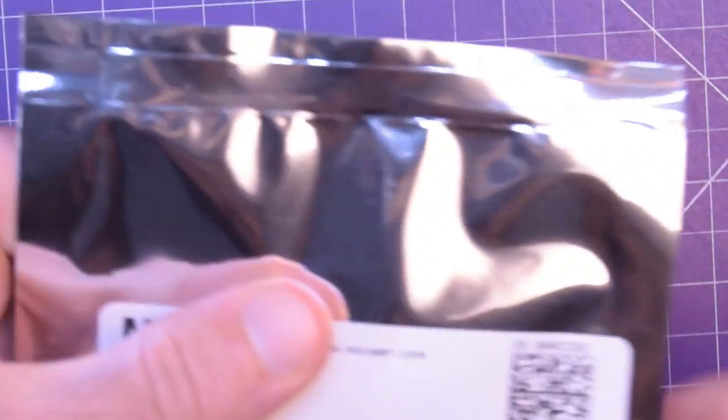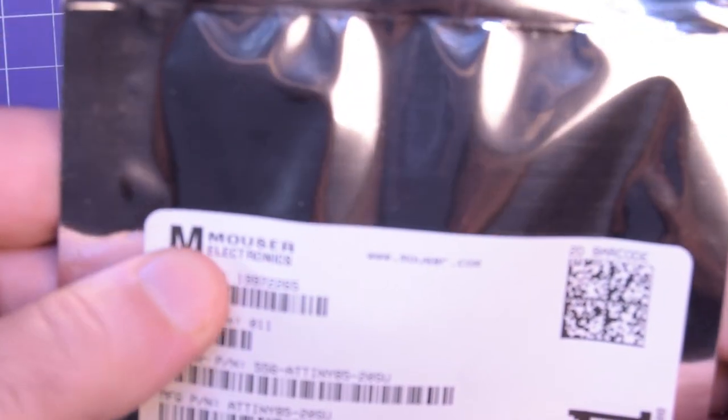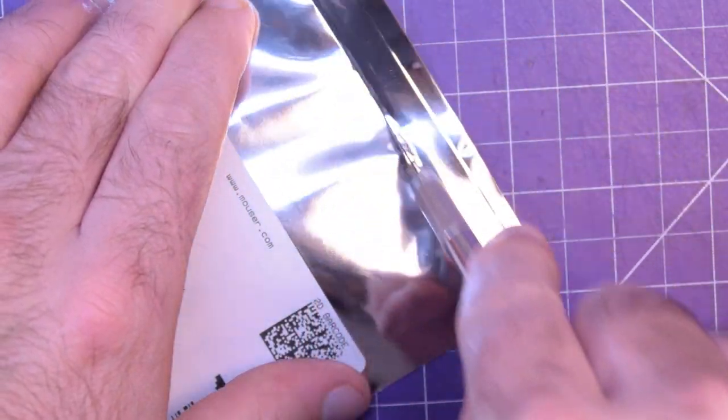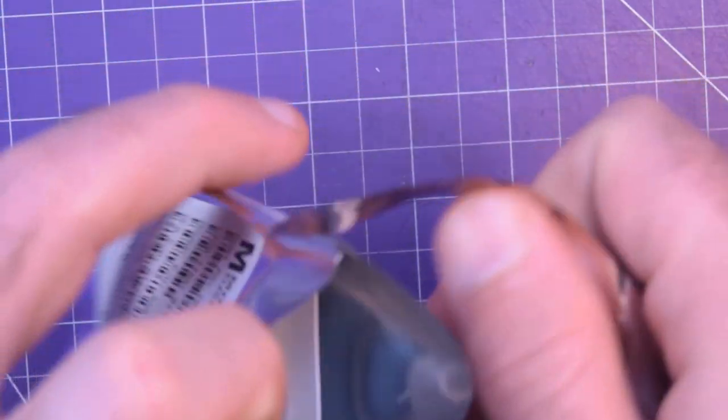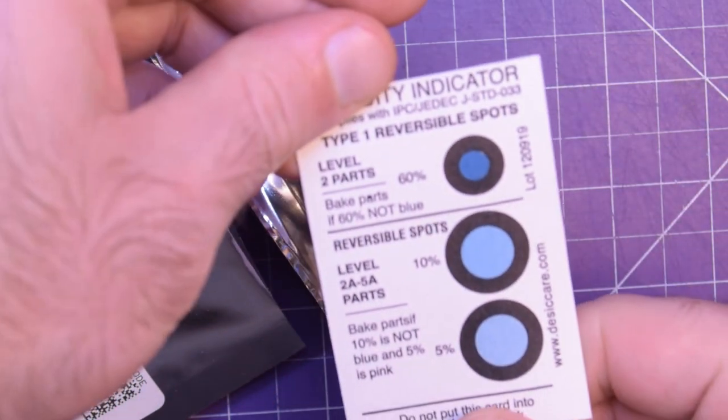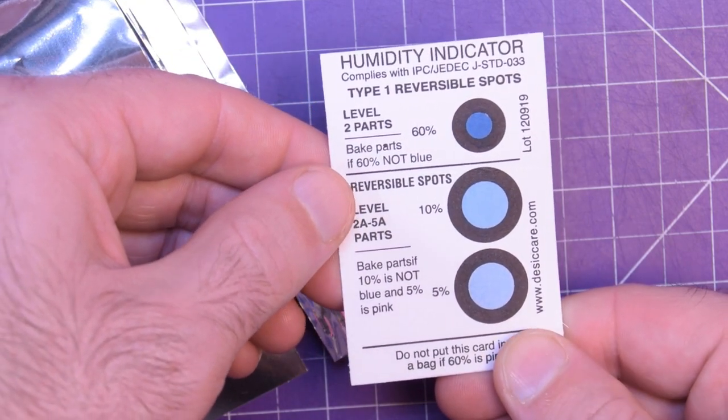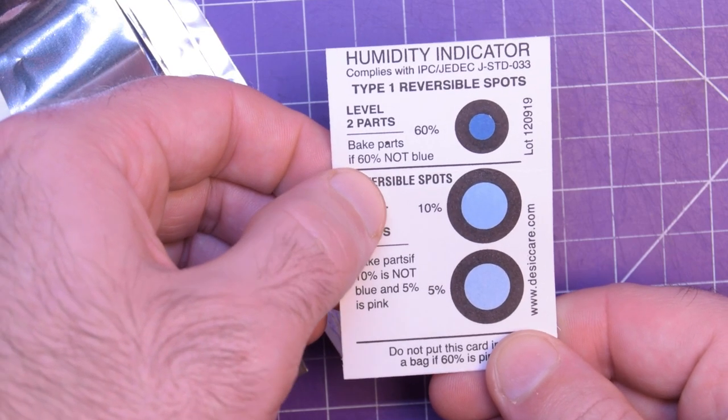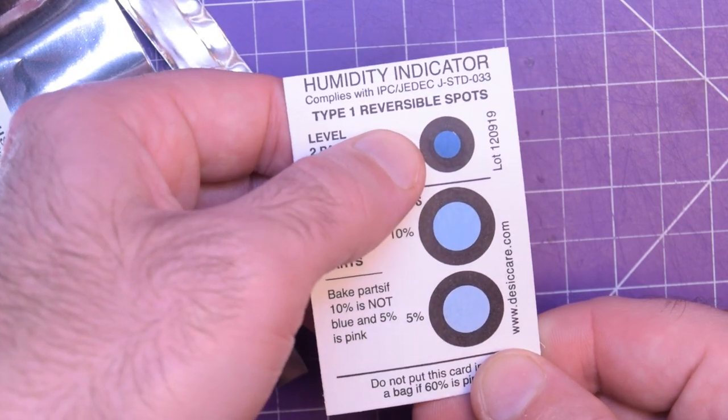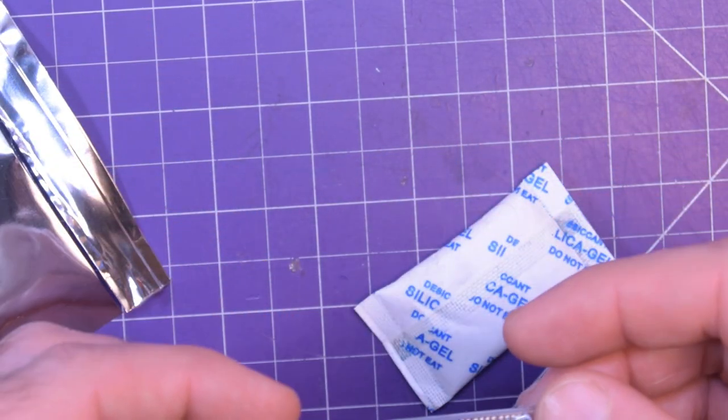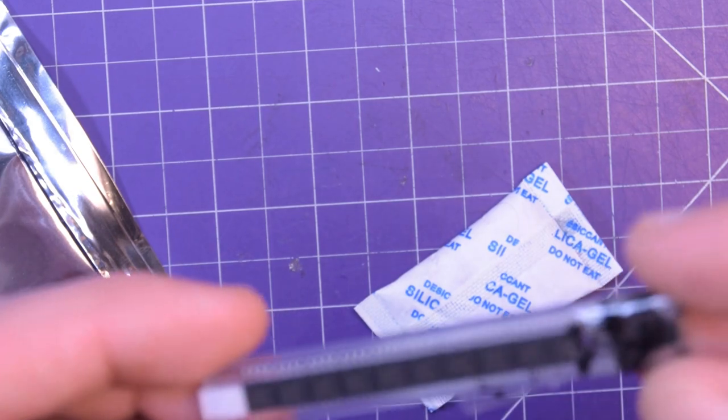And then we have this guy. I think there's more than one thing in here. Humidity indicator, very interesting. Bake parts if 60% not blue. Okay, it is blue. I'm going to leave this in the atmosphere here and see what happens with it later on.